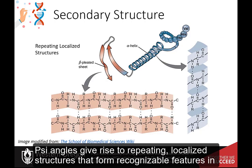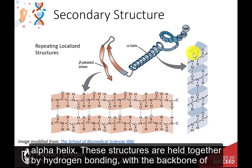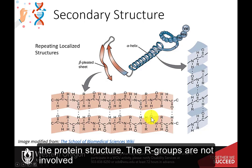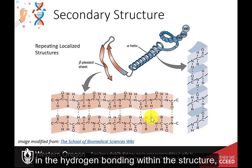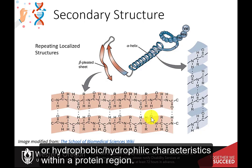The most favorable phi and psi angles give rise to repeating localized structures that form recognizable features in the protein. These include the beta-pleated sheet and alpha helix. These structures are held together by hydrogen bonding with the backbone of the protein structure. The R groups are not involved in the hydrogen bonding within the structure, but they can have an effect on the structure due to steric hindrance or hydrophobic-hydrophilic characteristics within that protein region.